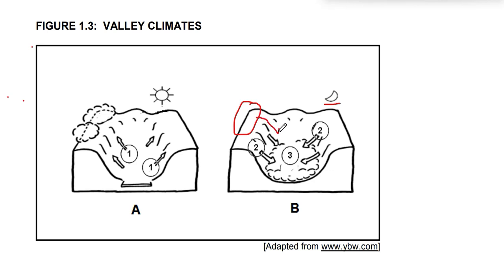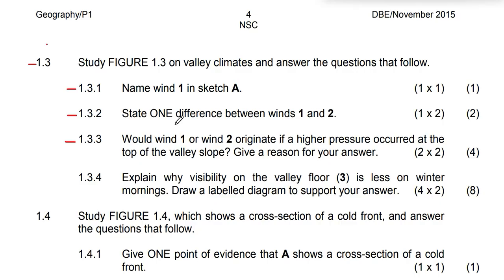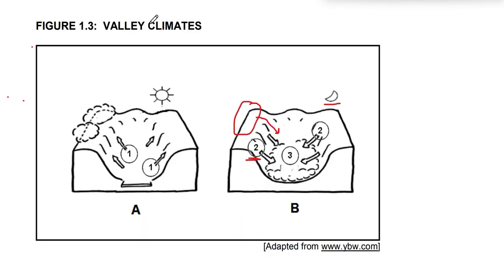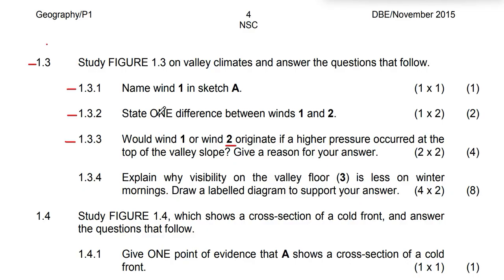Air moves from a high pressure position to a low pressure position. As you go higher, the cold air increases pressure, but going down the pressure decreases. So the air will move from higher pressure downward to lower pressure — meaning Wind 2 will form in this case. Wind 2 would form, and that is the reason.